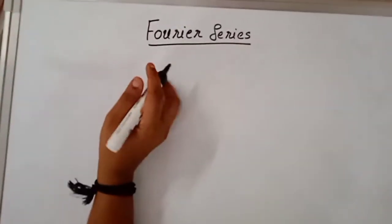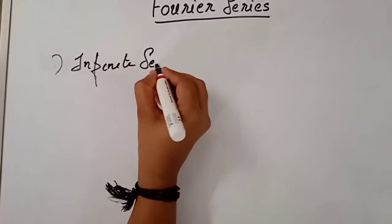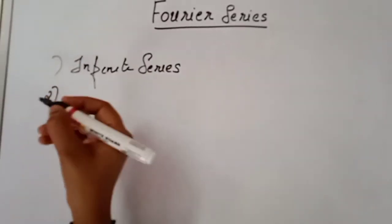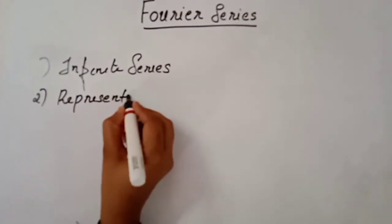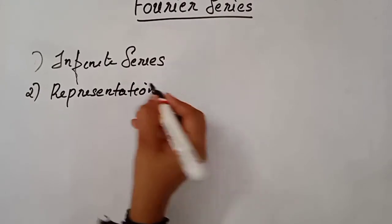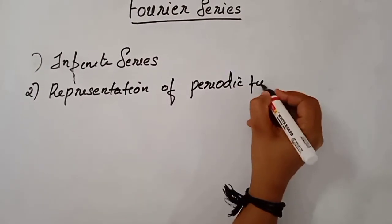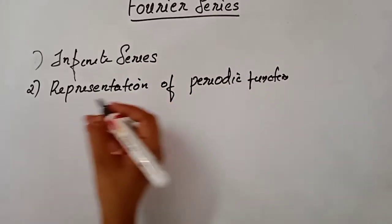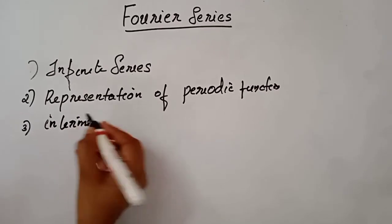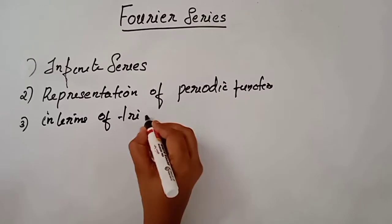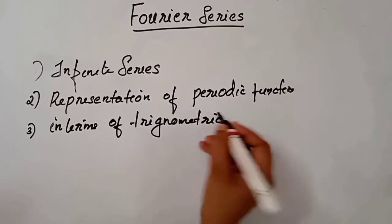Fourier series is an infinite series. It is a representation of a periodic function. A periodic function can be expressed in terms of Fourier series. It is expressed in terms of trigonometric functions. These are the properties of Fourier series.